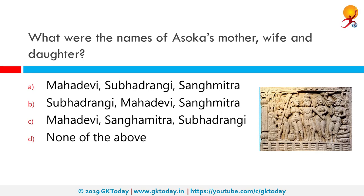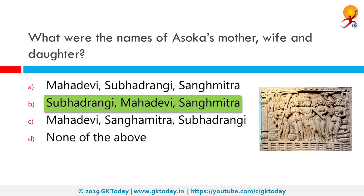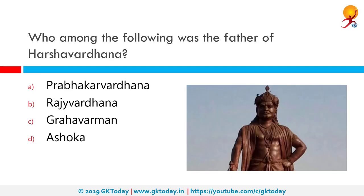What were the names of Ashoka's mother, wife and daughter? The correct answer is: Ashoka's mother was Subhadrangi, his wife was Mahadevi, and his daughter was Sanghamitra. Ashoka the Great was born in 304 BCE to Emperor Bindusara, who was the son of Emperor Chandragupta Maurya, founder of the Maurya dynasty. Ashoka was the third emperor of the Maurya dynasty and ruled the Indian subcontinent from 262 to 238 BCE, dying at the age of 72.